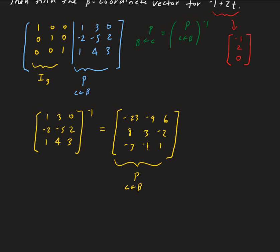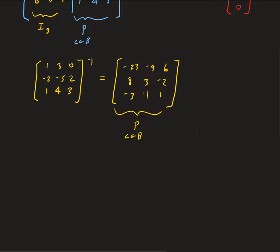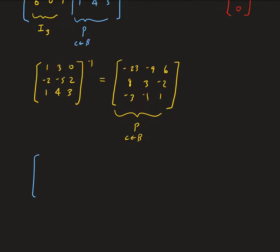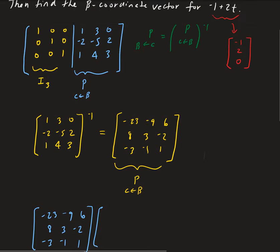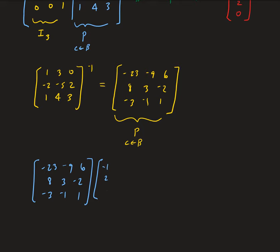So let's go ahead and apply this. We're going to take the matrix: minus 23, minus 9, 6 / 8, 3, minus 2 / negative 3, negative 1, 1, and multiply it by the corresponding vector for our polynomial, which was minus 1, 2, 0. We end up getting 5, minus 2, and 1.